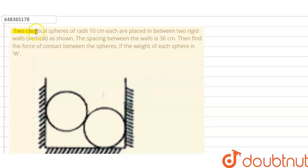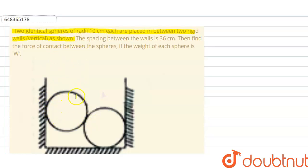Two identical spheres of radii 10 centimeters are placed in between two rigid vertical walls as shown. These are two identical spheres, one and two, having radius 10 centimeters. The spacing between the walls is 36 centimeters — the walls are 36 centimeters apart. Find the force of contact between the spheres if the weight of each sphere is w.